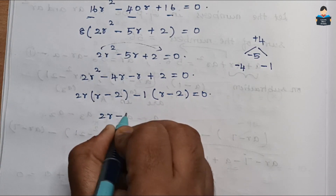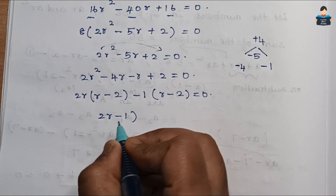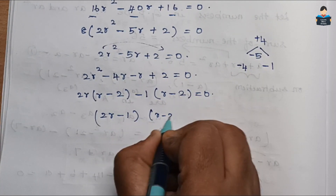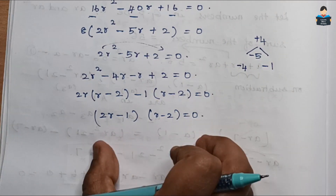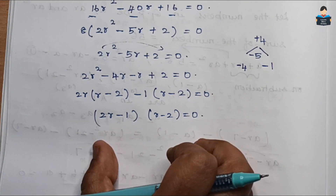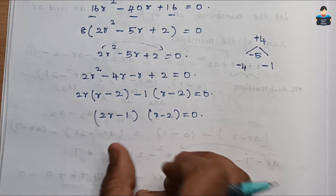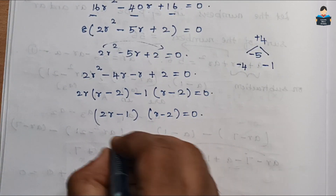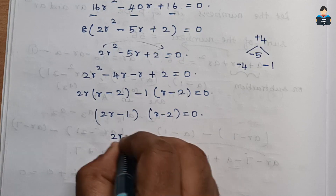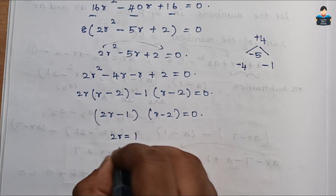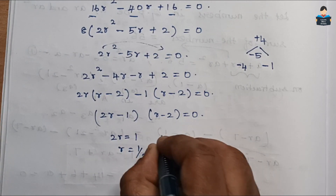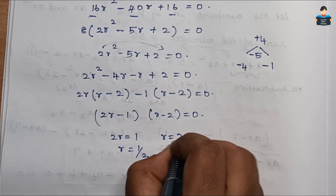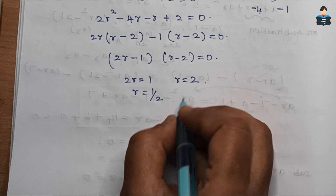Factoring: 2r(r − 2) − 1(r − 2) = 0, so (2r − 1)(r − 2) = 0. Therefore r = 1/2 or r = 2.